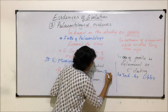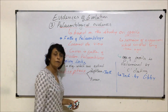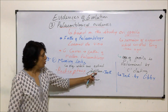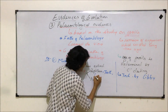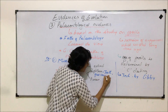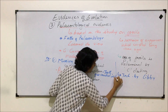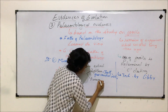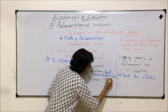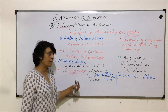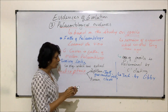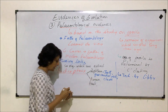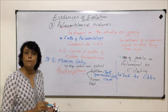The reptilian characters found in Archaeopteryx include: presence of teeth — teeth are present in reptiles but absent in birds; caudal vertebrae, which is also a reptilian feature; and presence of claws in the digits, also a reptilian feature.